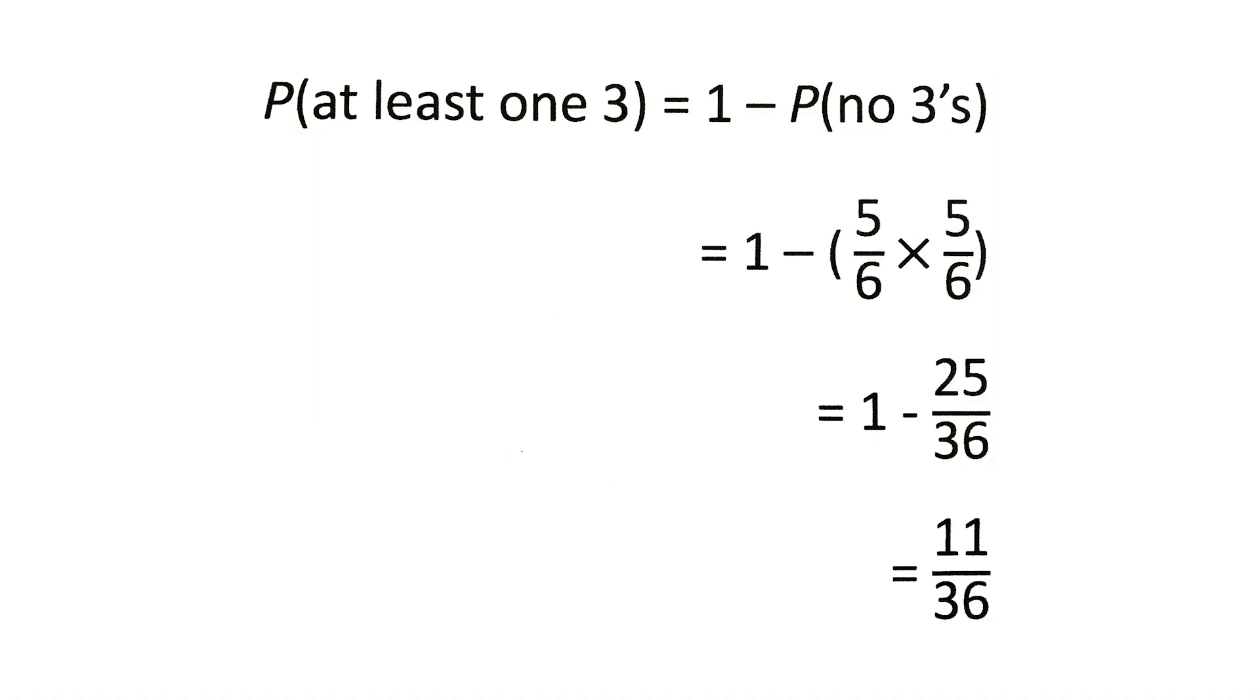So you set out your equation so that you say the probability of at least one three is equal to one minus the probability of rolling no threes. So that's equal to one minus five over six times five over six.